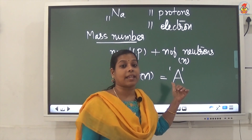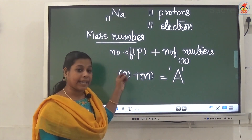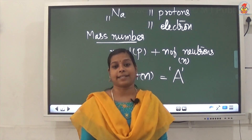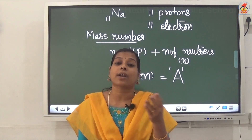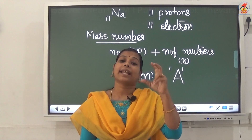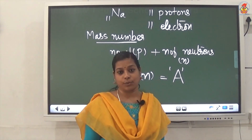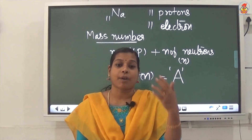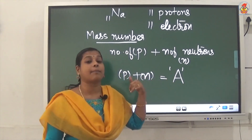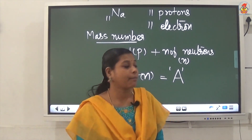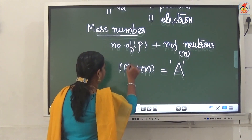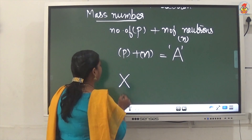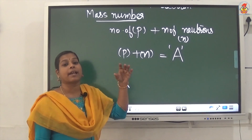Capital letter A is the mass number — the sum of number of protons and number of neutrons present in an atom. Protons and neutrons are present inside the nucleus, and electrons revolve around the nucleus. Suppose an element is X; it can be represented by its atomic number and mass number.